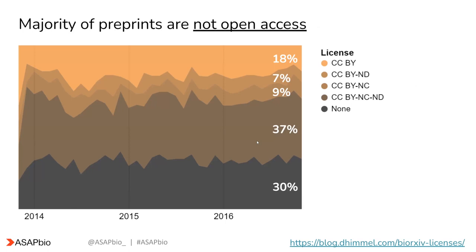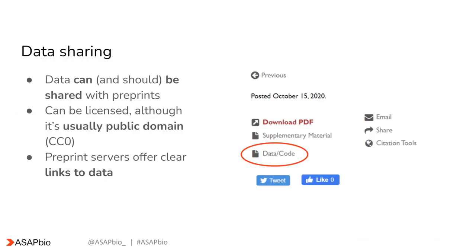It's important to know that the majority of preprints are not open access. In this study from Daniel Helmstein, the majority of preprints had either no licenses or licenses that severely restricted their reuse. The topic of data sharing is also important. Data can and should be shared with preprints, and preprint servers offer clear links to that data.